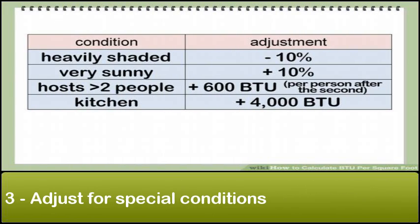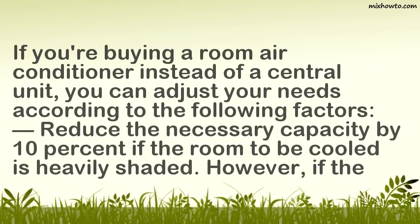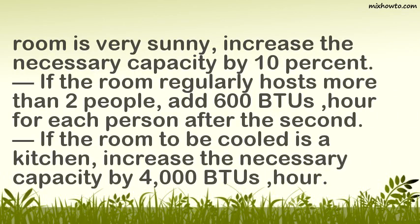Adjust for special conditions. If you're buying a room air conditioner instead of a central unit, you can adjust your needs according to the following factors: reduce the necessary capacity by 10% if the room to be cooled is heavily shaded; however, if the room is very sunny, increase the necessary capacity by 10%. If the room regularly hosts more than 2 people, add 600 BTUs for each person after the second. If the room to be cooled is a kitchen, increase the necessary capacity by 4,000 BTUs per hour.